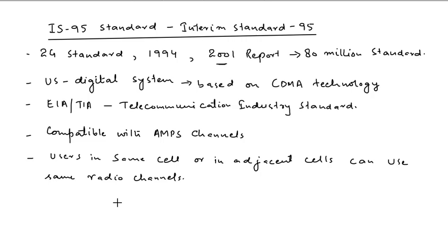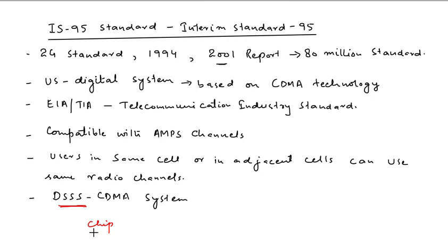Users in the same or adjacent cells can use the same radio channels because this standard is based on DSSS CDMA — Direct Sequence Spread Spectrum. In this system, the transmitted signal is spread and made wider in bandwidth compared to the original information message bandwidth, done to avoid interference with adjacent channels. After de-spreading at the receiver, the original information bandwidth is restored and interference is reduced.